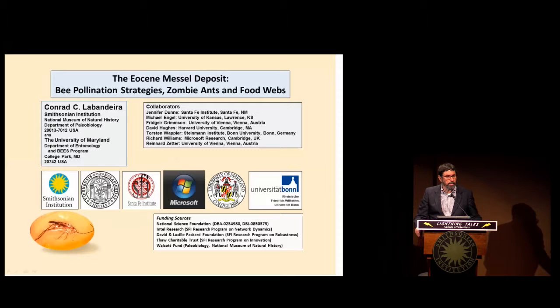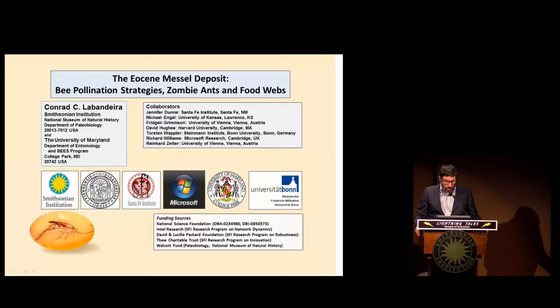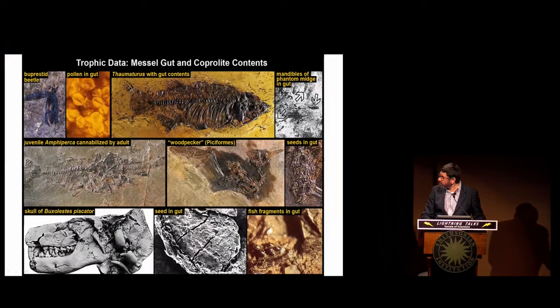The Eocene Messel deposit is an amazing place — a 48 million year old deposit that was deposited in central-west Germany, and it consists of one of the most exceptionally preserved deposits in all of the fossil record. To give you an idea of what this entails, we have up here on the board beetles with pollen in their guts, and there's a lot involved in constructing trophic relationships among organisms.